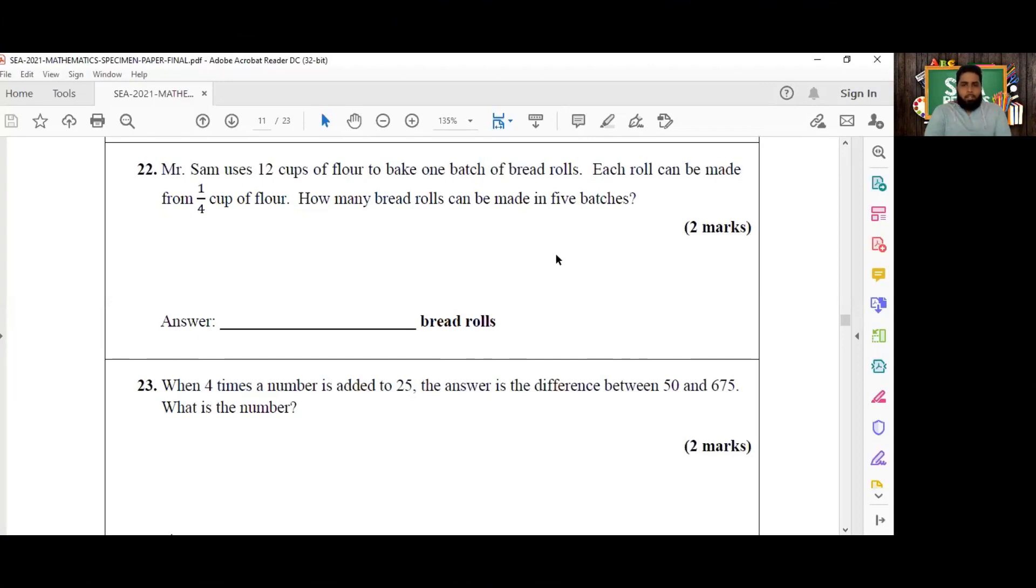Okay guys, so we're here on number 22 now, which reads: Mr. Sam uses 12 cups of flour to bake one batch of bread rolls. Each roll can be made from one quarter cup of flour. How many bread rolls can be made in five batches?